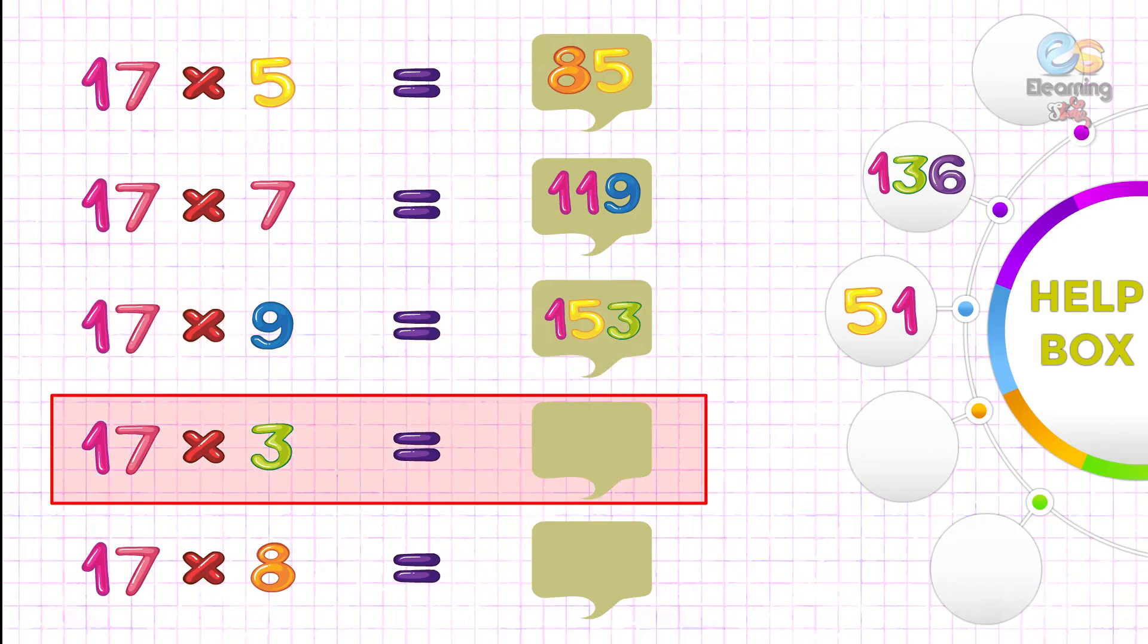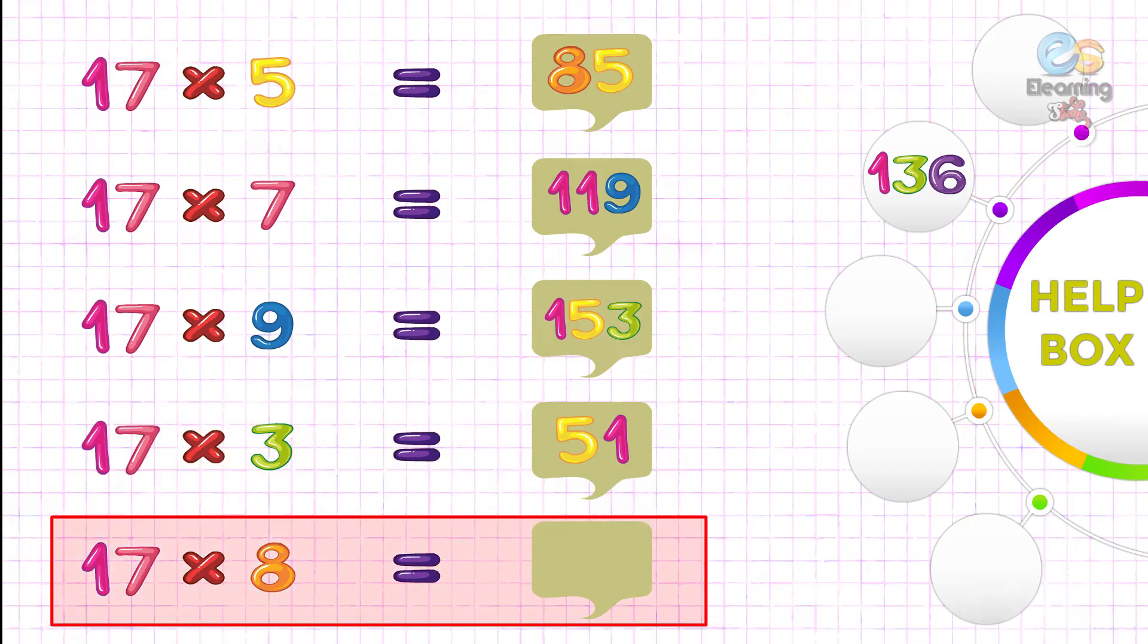17 threes are? 51. Right answer. 17 eights are? 136.